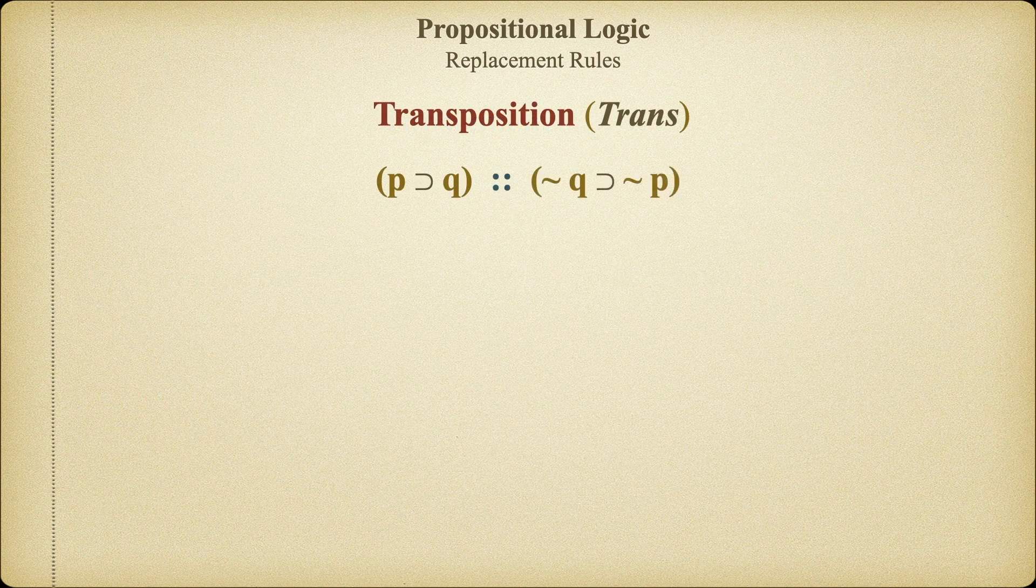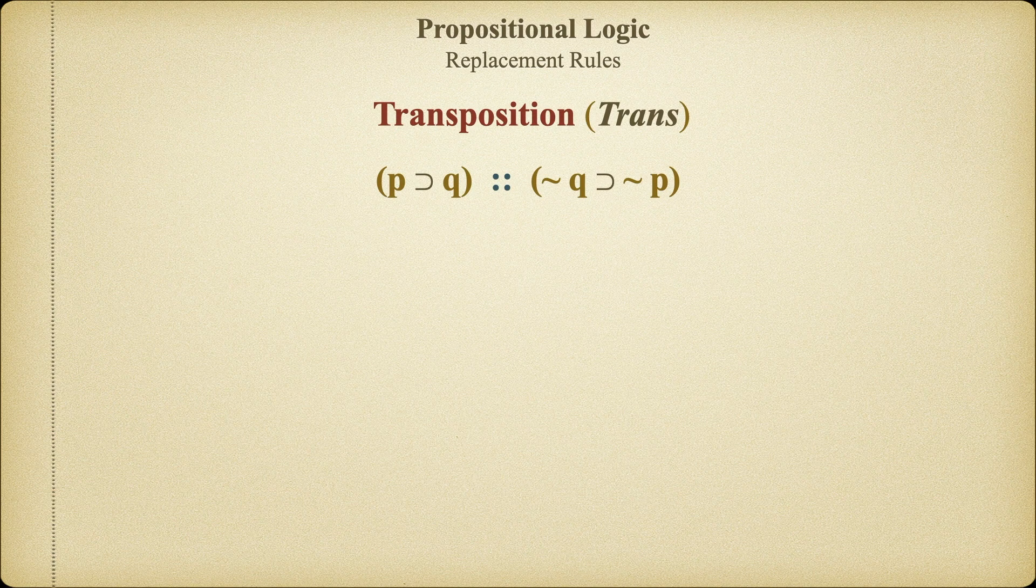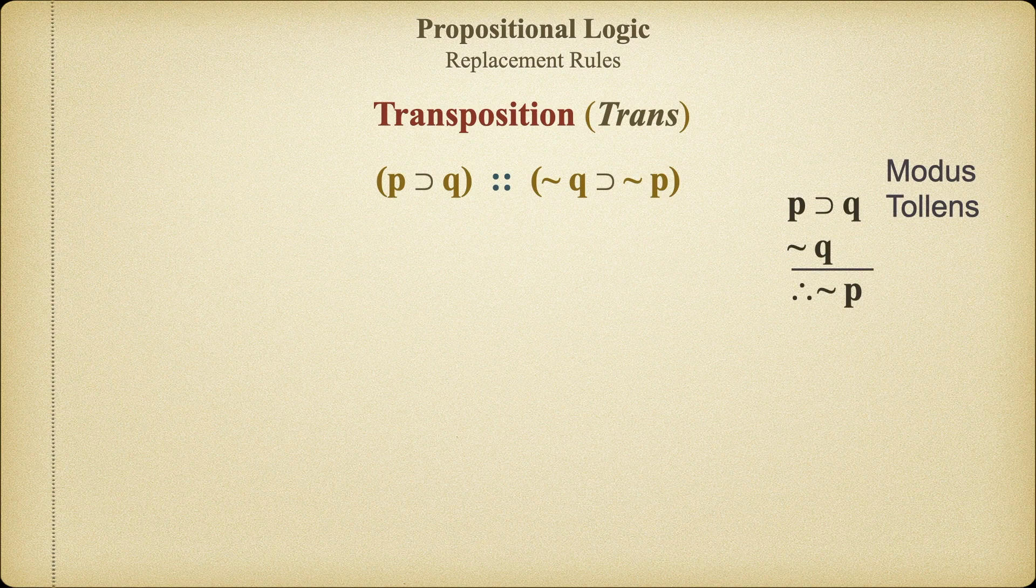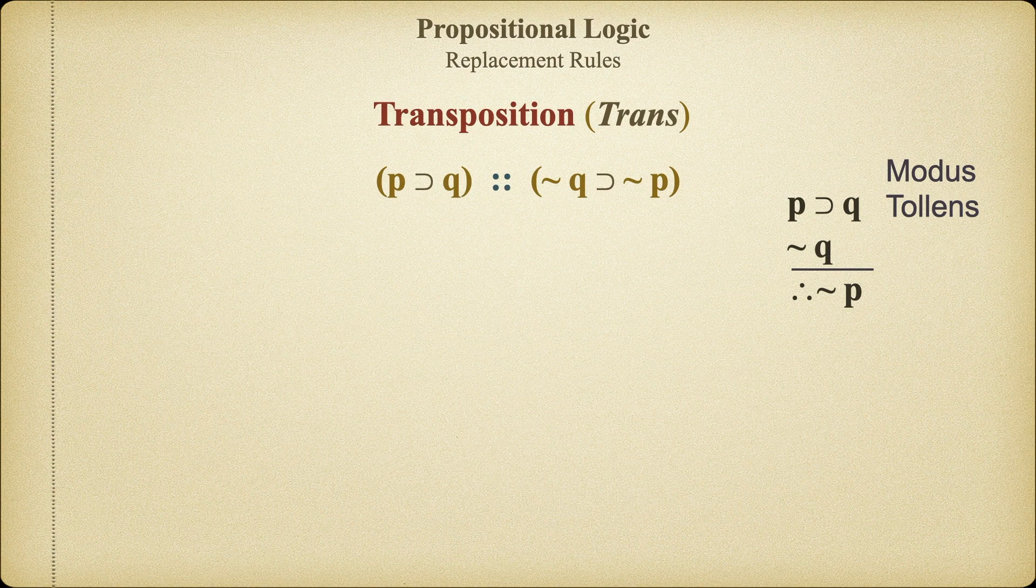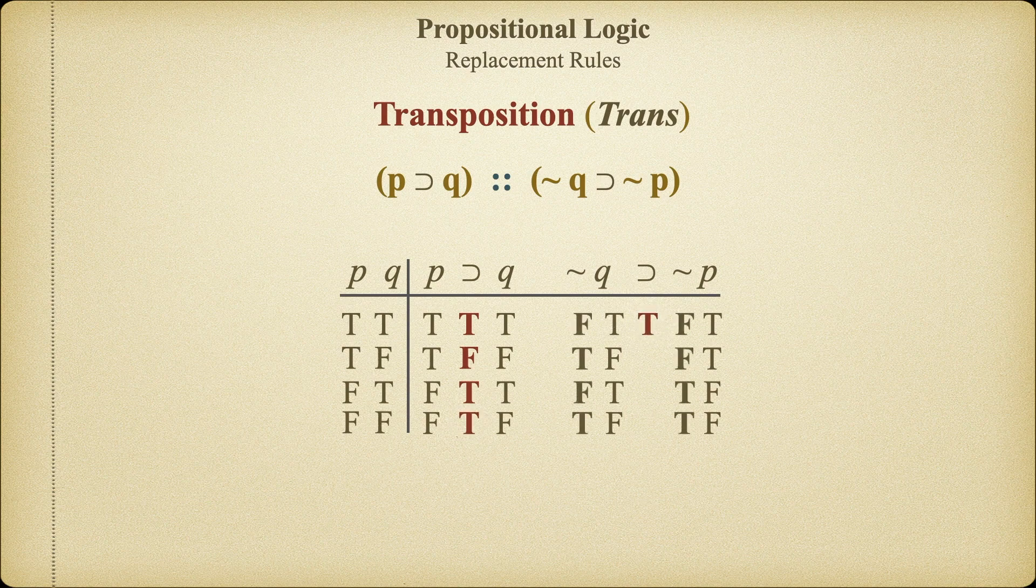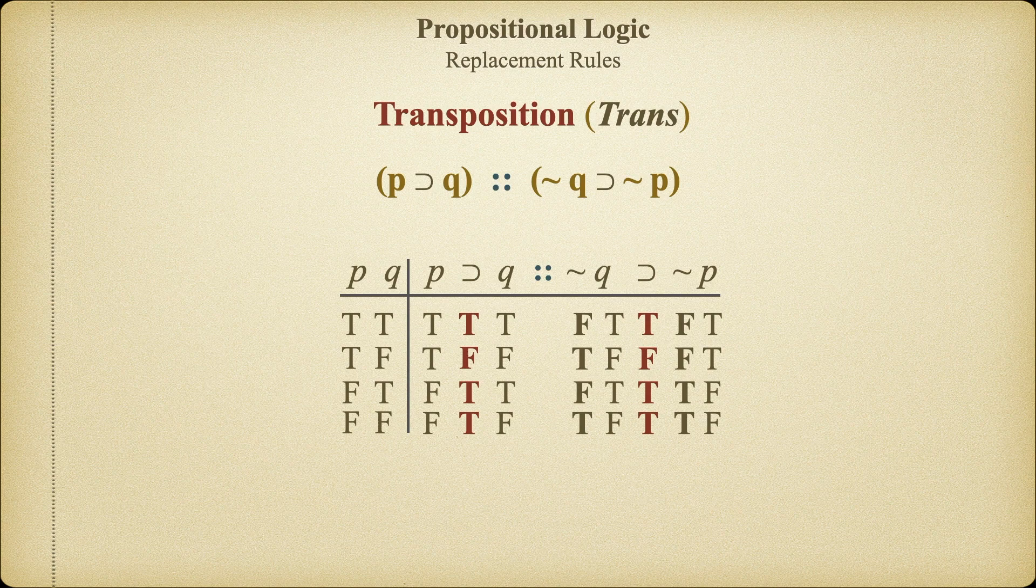Transposition tells us that if P, then Q is logically equivalent to, if it's not the case that Q, then it's not the case that P. This is basically the same thing we learned with Modus Tollens. If we deny the necessary condition, we must also deny the sufficient condition. If there's fire, then there must be oxygen present. But, if there's no oxygen, there certainly cannot be fire. A quick truth table will demonstrate the logical equivalency of these two propositions, just in case there's any doubt. So, what we've learned is that we can always substitute, if it's not the case that Q, then it's not the case that P, for, if P, then Q, and of course, vice versa.